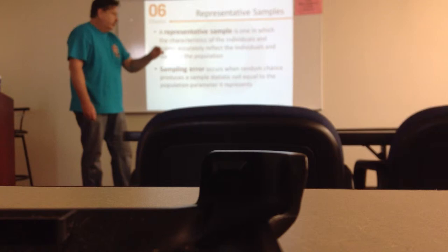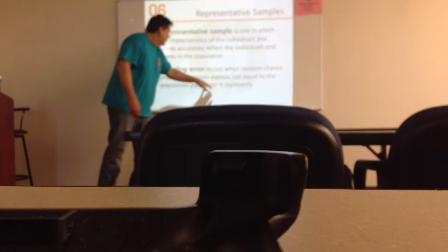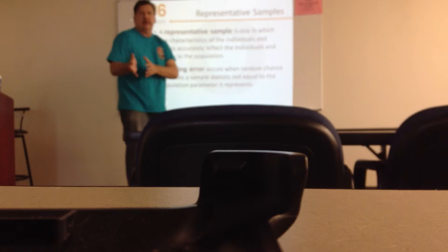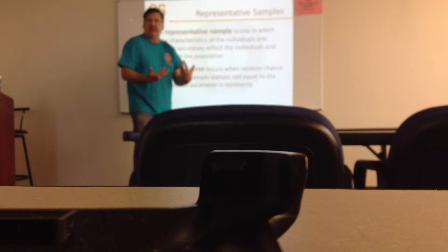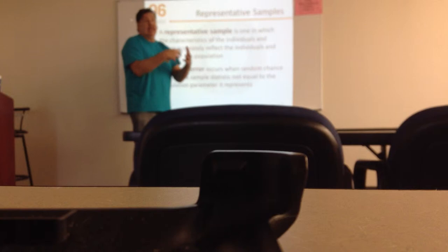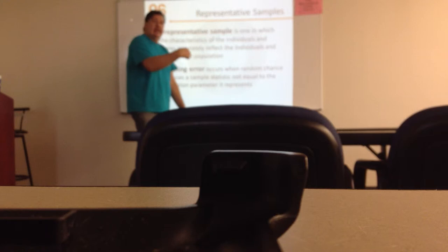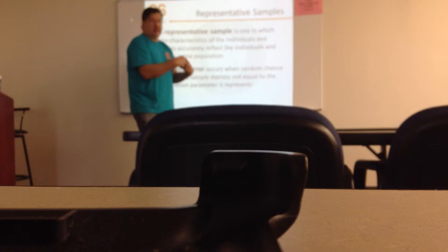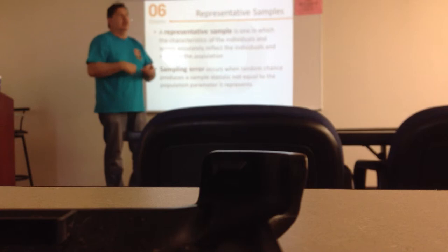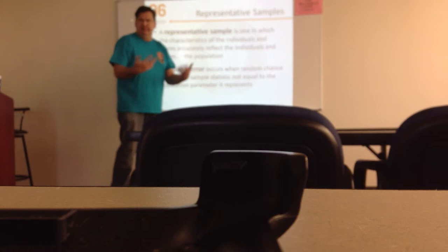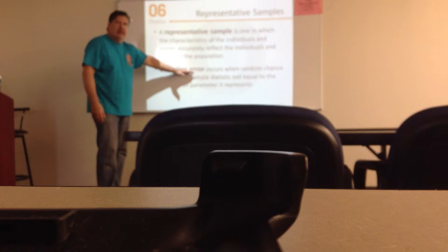Sampling error occurs when random chance produces a sample statistic not equal to the population parameter it represents. Sampling error is always going to occur — I'm always going to have some kind of error. With scientific procedures like hypothesis testing, I can determine what my sampling error is. I can set my sampling error at 5% — that's called an alpha level. There's a 5% chance that my results are not going to be accurate, but there's a 95% chance that my results are going to be accurate. That's where this comes from in a lot of political polls and things like that.